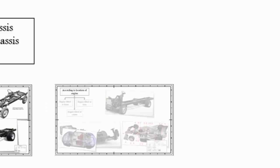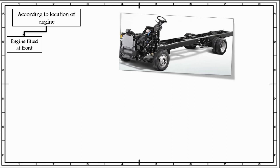Based on the location of the engine, chassis can be classified as engine fitted at front. Conventionally, in most vehicles, the engine is fitted at the front of the chassis. There are three options of drive available for engine fitted at front: first, engine fitted at the front with drive provided to the rear wheels — meaning front engine, rear wheel drive; second, engine fitted at the front with drive also provided to the front wheel — meaning front engine, front wheel drive; and third, engine fitted at the front in a crosswise manner with drive also provided to the front wheel. An example of engine fitted at front is shown in this figure.